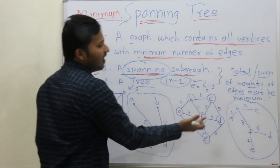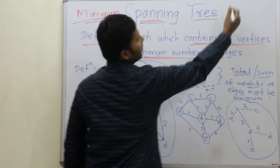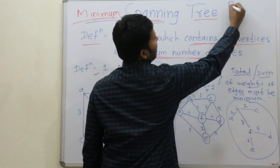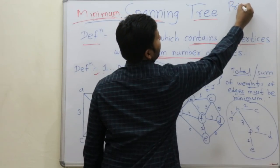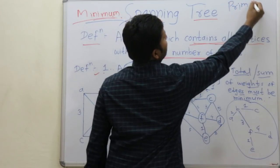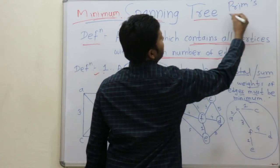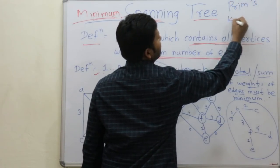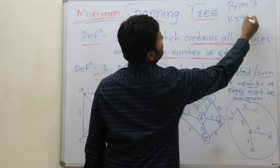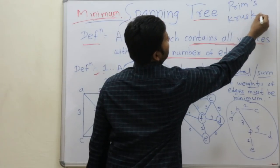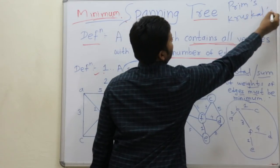So we need an algorithm for that. There are two algorithms: one is Prim's algorithm and another is Kruskal's algorithm for finding the minimum spanning tree.